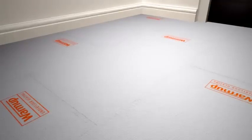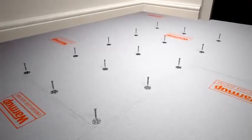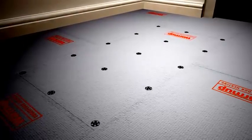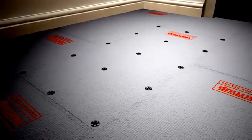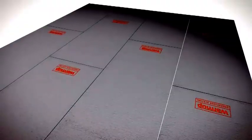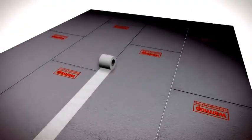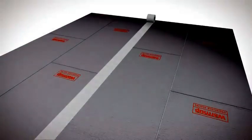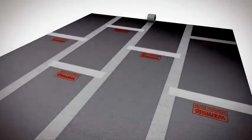When installing Warmup insulation boards onto wooden floors, you should also screw down the boards at 300mm intervals to make sure they are secure. In wet areas, you can use waterproof jointing tape to create a waterproof joint between the boards.